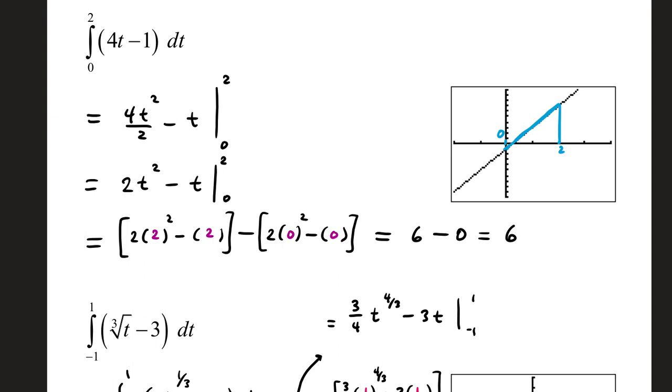The main thing is to correctly take the antiderivative. So for 4t, its antiderivative is going to be 2t squared. You add 1 to the power, divide by the result, and then simplify.